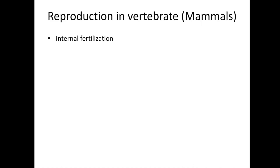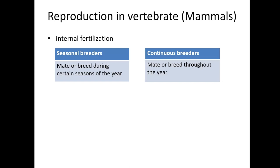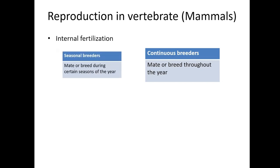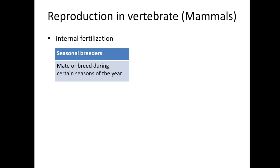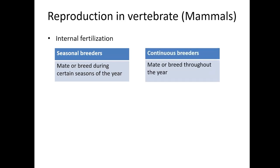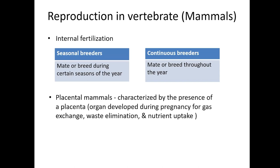Fertilization in mammals occurs internally. Breeders can be seasonal or continuous. Certain mammals are called seasonal breeders since they can reproduce only during a certain period of the year, while some are called continuous breeders since they can reproduce throughout the year. The majority of mammals are placental mammals, characterized by the presence of a placenta.